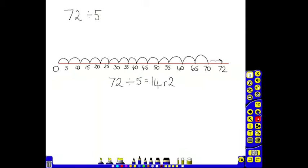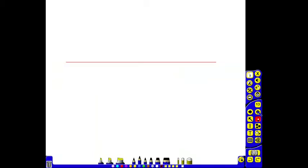This then leads on to chunking along the number line, where 10 lots of the divisor is one chunk, because it's much quicker and more efficient. So with the same division problem, 72 divided by 5, using a number line, the children will start at 0.